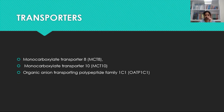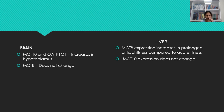The transporters available are MCT8 (Monocarboxylate Transporter 8), MCT10, and Organic Anion Transporting Polypeptide Family C1 (OATP1C1). These three transporters transport T3 and T4 into the cells. In the brain, MCT10 and OATP1C1 will be increased in the hypothalamus, while MCT8 does not change. Coming to the liver, MCT8 expression will be increased in case of prolonged illness and MCT10 does not change.